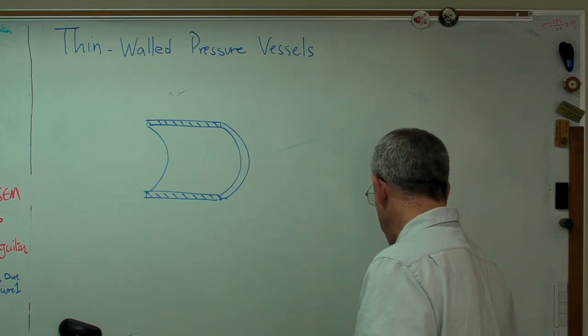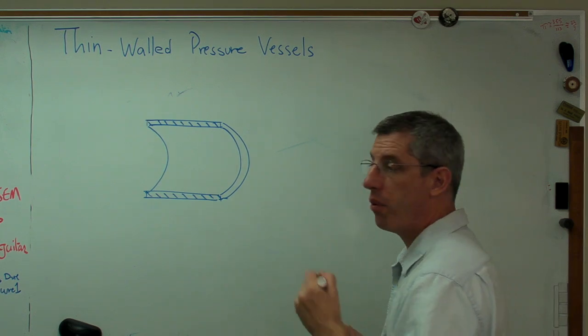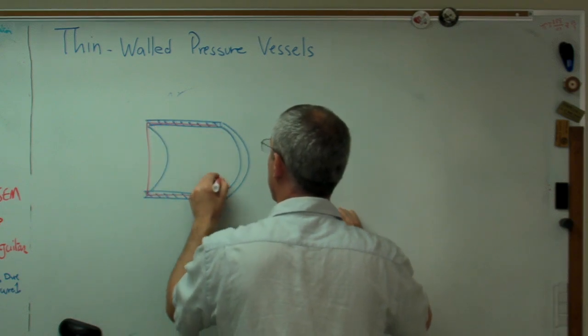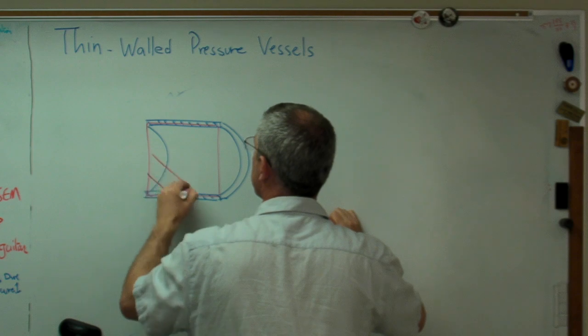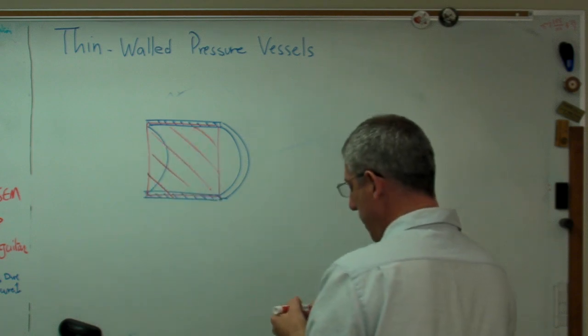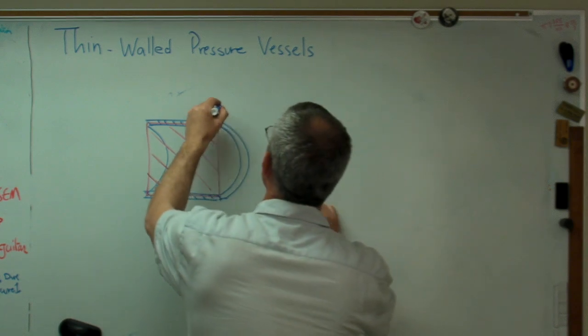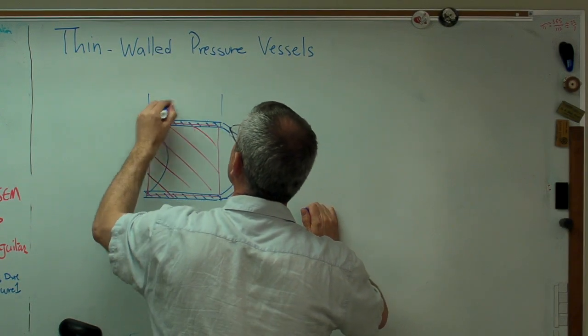And the way we're going to do that is look at this thing from the side where that's the area of the metal that can resist the pressure and the force. And the pressure acts over an area that looks like this.